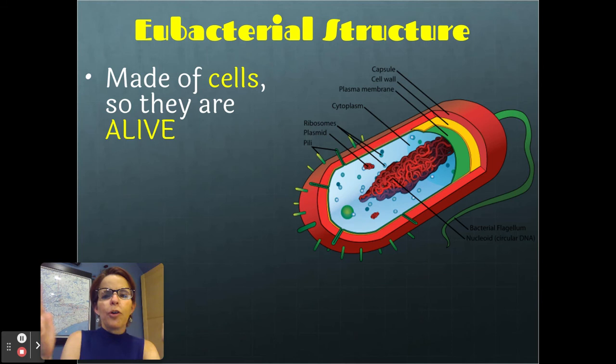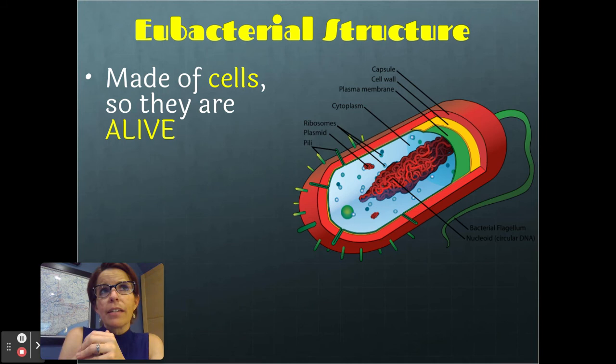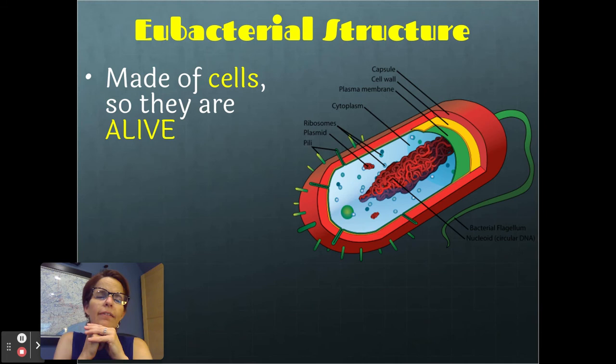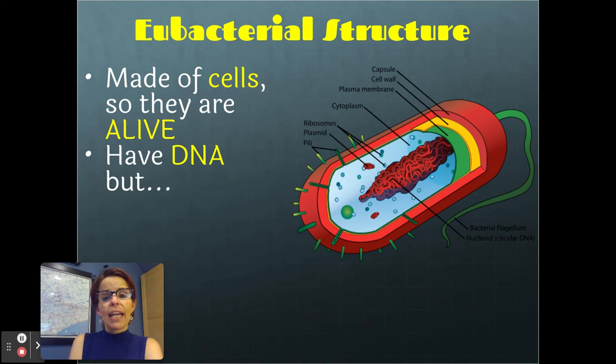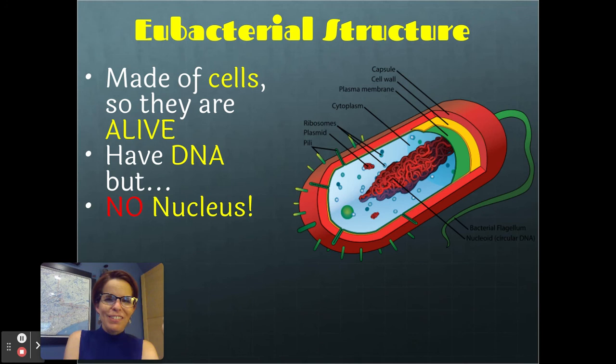Let's talk about how the Eubacteria look. They're made of cells — that little rod-shaped thing is a cell, and it's only the size of a mitochondria. In any one of your cells you might have hundreds or even thousands of mitochondria, so that gives you a sense of how incredibly small a bacterium is. Because they're made of cells, we consider them alive. They have DNA — that's the squiggly noodles in the middle — but they don't have a nucleus, which is why they're called prokaryotes. They don't have any of the other organelles like Golgi or mitochondria or chloroplasts. They are very, very simple and very, very small.